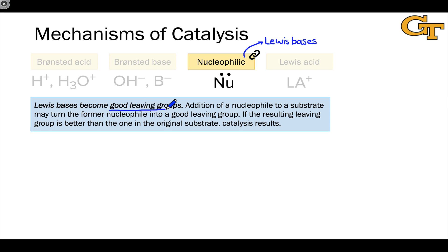into a better leaving group. What can happen is the addition of a nucleophile to a substrate, or the substitution of one nucleophile for another, may turn the catalyst into a good leaving group within the substrate. And if that resulting leaving group is a better one than the one in the original substrate, then catalysis results.